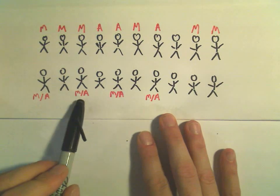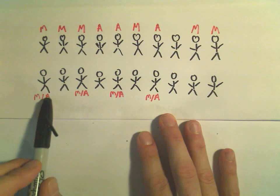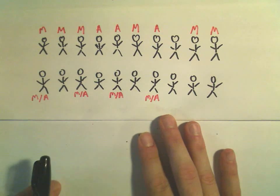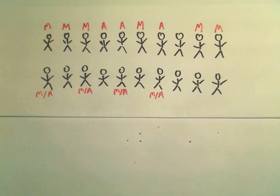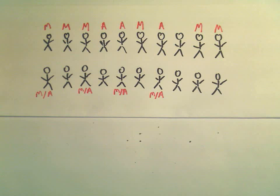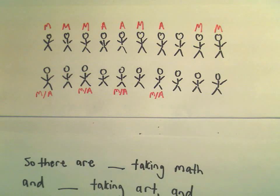We've got some people in the bottom row that are taking both math and art. So we've got one, two, three, four people that are taking math and art. So it looks like if we count up here, we've got 20 people total. And you can count that. So I'm going to fill in a little bit of information here.